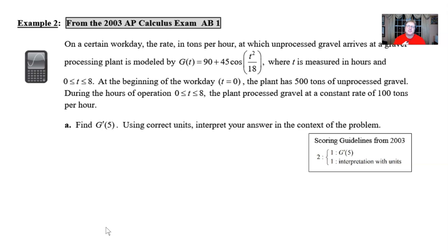This is from the 2003 operational exam. This was AB1 that year and it says on a certain workday the rate in tons per hour at which unprocessed gravel arrives at a gravel processing plant is modeled by g(t) = 90 + 45cos(t²/18).